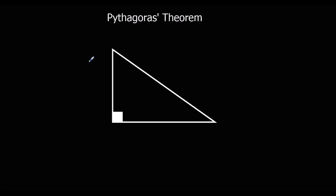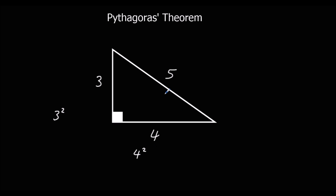So what Pythagoras Theorem says is: the two short sides squared add up to the long side squared. So the square of this side and the square of this side adds up to the long side squared. In this case, 3 squared plus 4 squared.